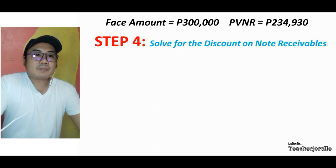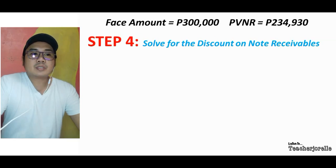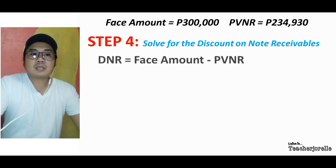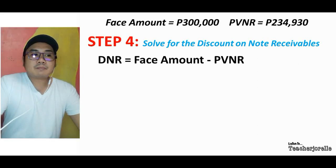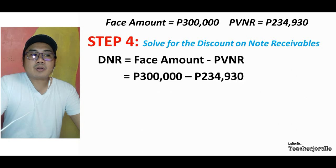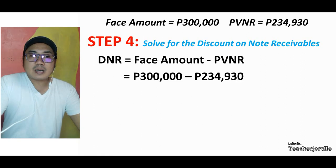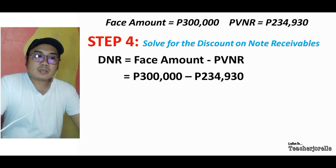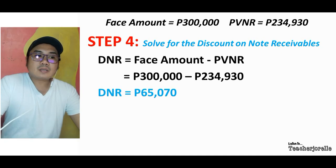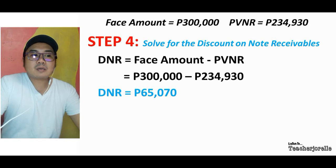Step 4: Solve for the discount on the notes receivable. To solve for this, subtract the present value of the note receivable from the face amount. Face amount of 300,000 minus 234,930 gives a discount on the note receivable equal to 65,070.